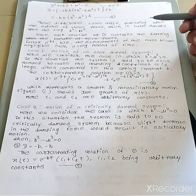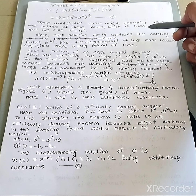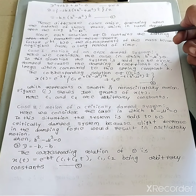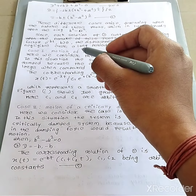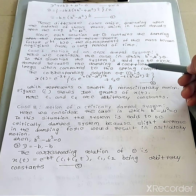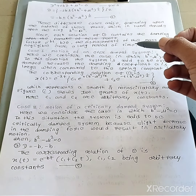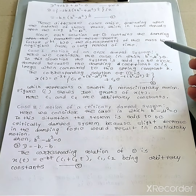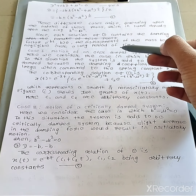The nature of the roots depends upon b² minus μ². There are three different cases depending on the sign of b² minus μ². The solution always contains the factor e raised to power minus bt, and since b greater than 0, the displacement of mass approaches zero over a long period of time.